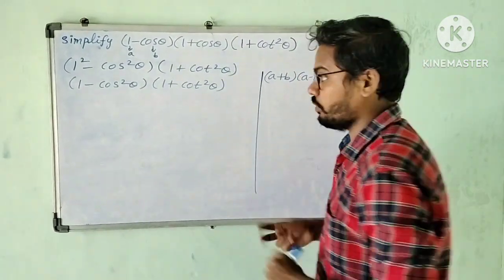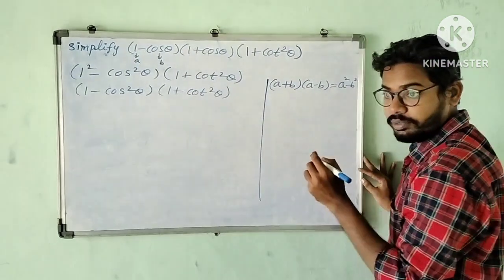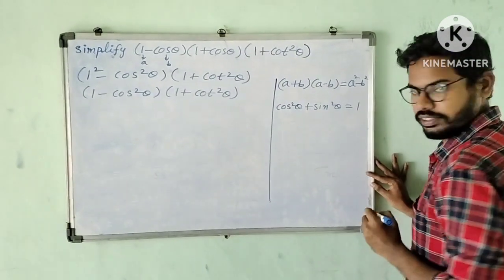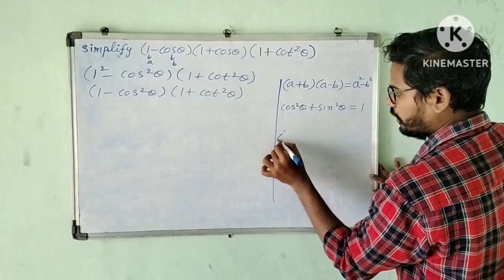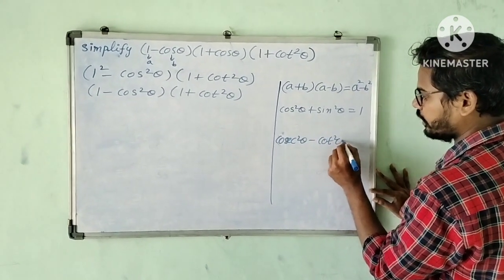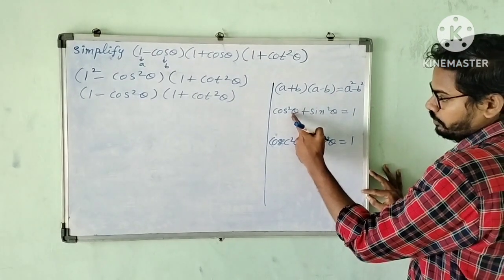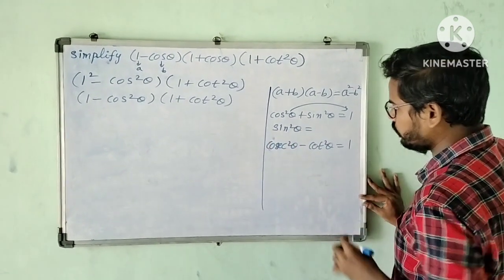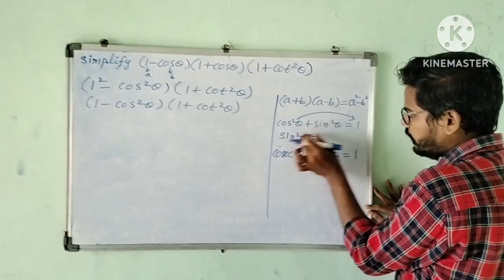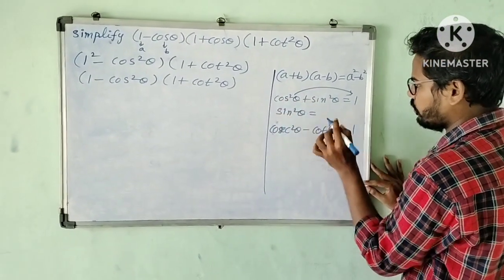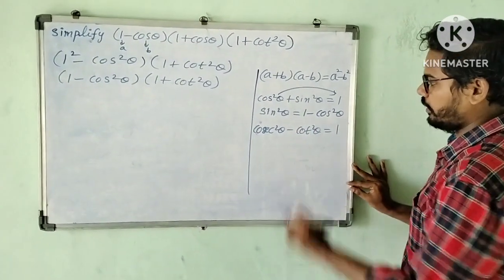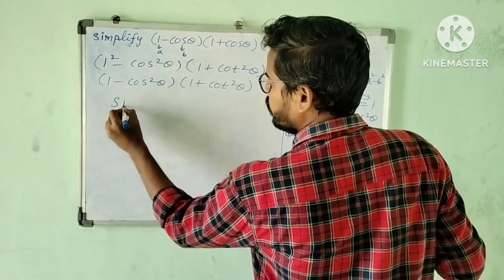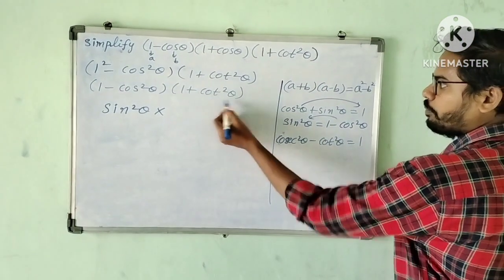So here we have to apply two identities. In trigonometry, we know that cos squared theta plus sin squared theta equals 1. Similarly, cosecant squared theta minus cot squared theta equals 1. From the first identity, transposing cos squared theta, we get sin squared theta equals 1 minus cos squared theta. So 1 minus cos squared theta is equal to sin squared theta.